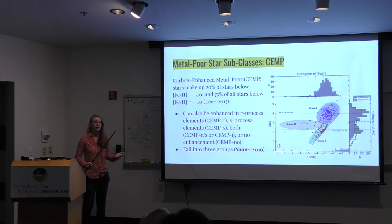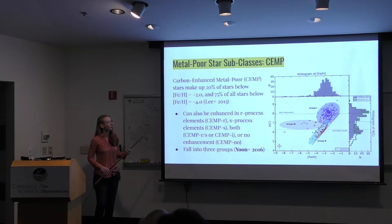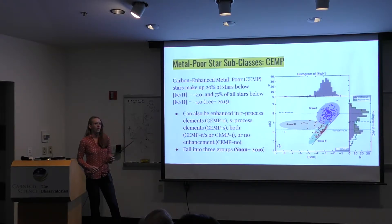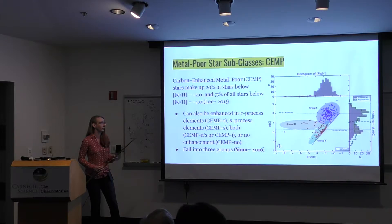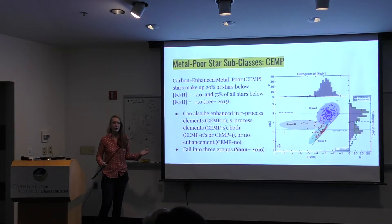I want to talk about some interesting subclasses of metal-poor stars. One such subclass is the carbon-enhanced metal-poor, or CEMP, stars, which make up a fairly solid fraction of metal-poor stars. 20% of stars below a metallicity of minus 2 are CEMP, and that number goes all the way up to 75% once you get to a metallicity of minus 4. CEMP stars can also be enhanced in R-process and S-process elements, both, or neither.